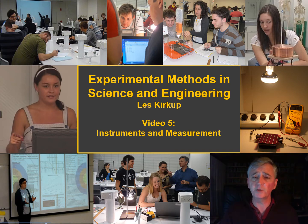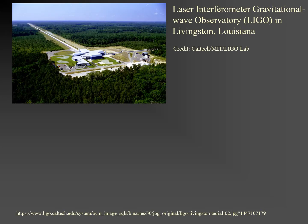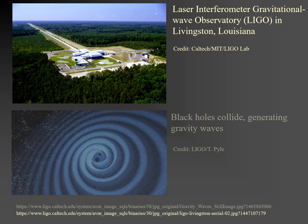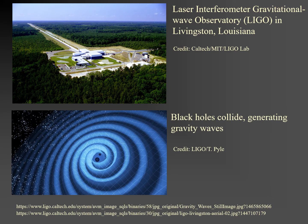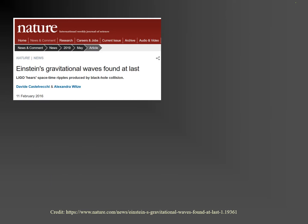We begin by looking at a rather special instrument. This is the Laser Interferometer Gravitational Wave Observatory, otherwise known as LIGO, situated in Livingston, Louisiana. LIGO's purpose is to detect gravitational waves generated, for example, when two black holes collide. Gravitational waves are a prediction of Einstein's theory of general relativity. Direct observation of such waves has been the ambition of several generations of scientists. LIGO detected gravitational waves in 2015. The detection was greeted with much excitement among scientists and was widely reported.